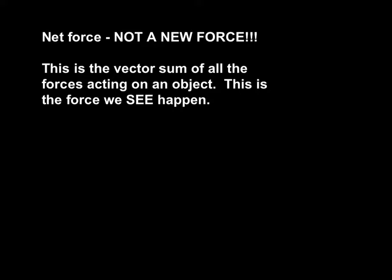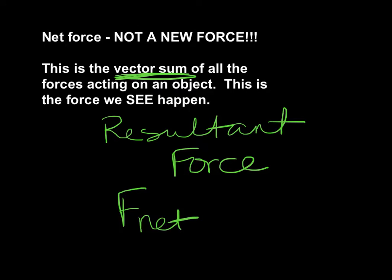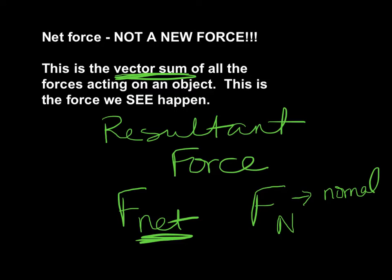The most misunderstood force is the net force — that is not a new force. The net force is not a force in and of itself; it is the vector sum of all the forces acting on the object, and this is what we actually see happening. In vector terms this would be our resultant force. We'll call it F-net so that we don't get it confused with F-N, which was our normal force.